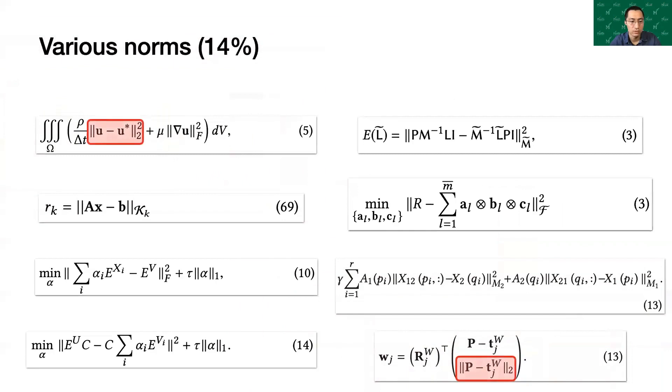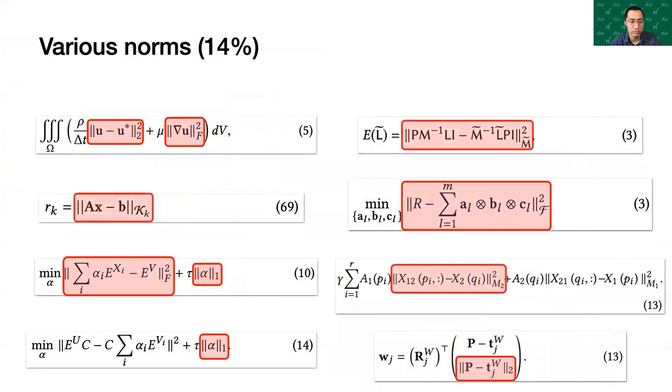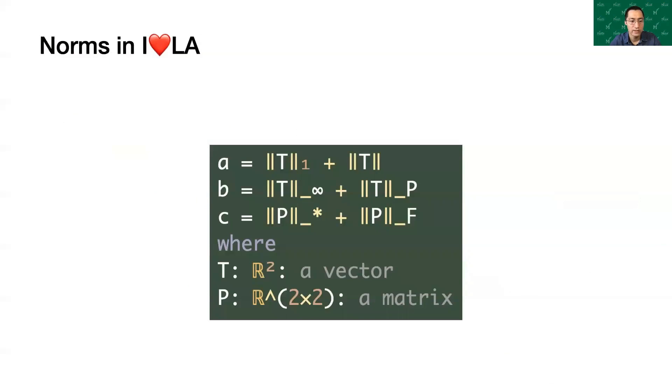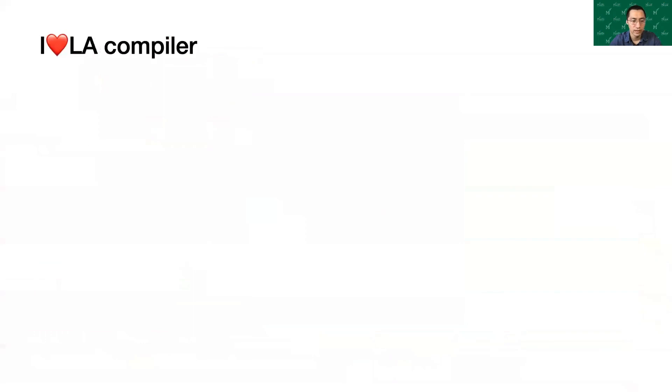These are examples of various norms, such as L2 norms, L1 norms, Frobenius norms, and vector norms with matrix subscripts. Here are examples of norms in I❤LA.